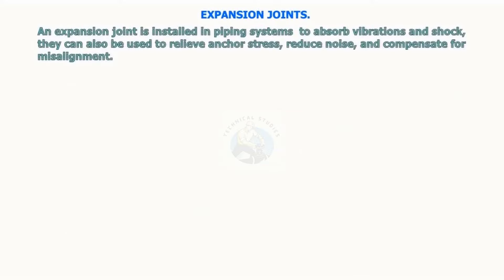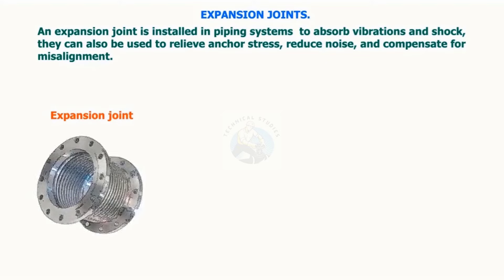An expansion joint is installed in piping systems to absorb vibrations and shock. They can also be used to relieve anchor stress, reduce noise, and compensate for misalignment.